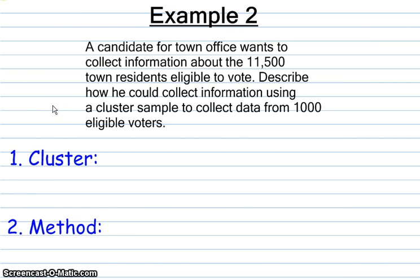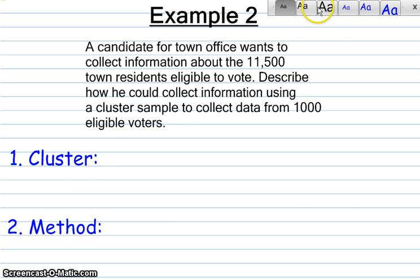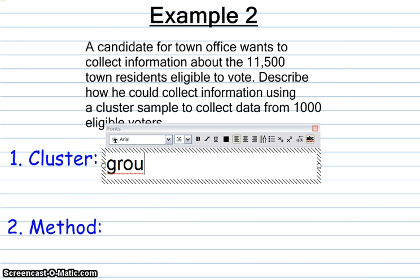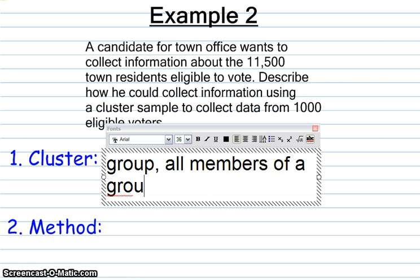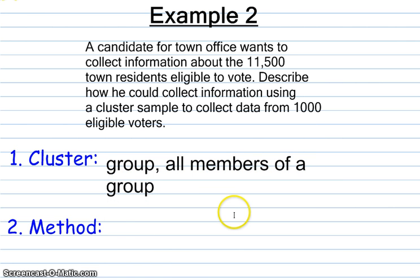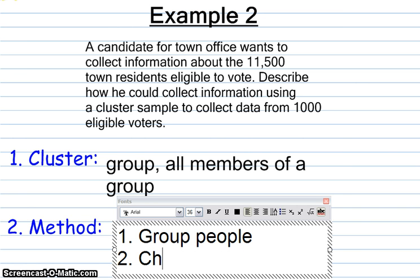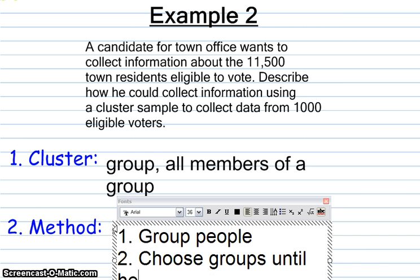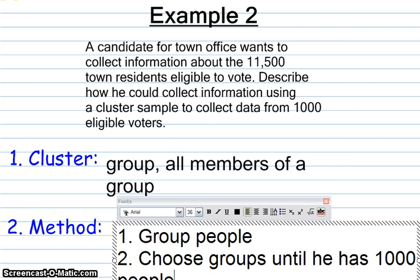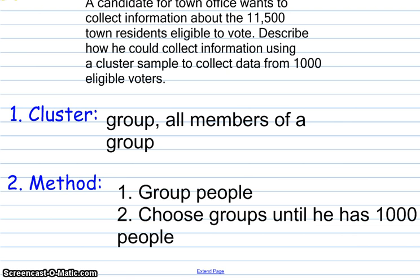Next example — take a second and read. The candidate wants to create a cluster sample. If you think about cluster sampling, he wants to group them and then choose all members of a group. So the best method would be to first group people into groups and then secondly choose groups until he has a thousand people. That would be the best cluster method for this sample.